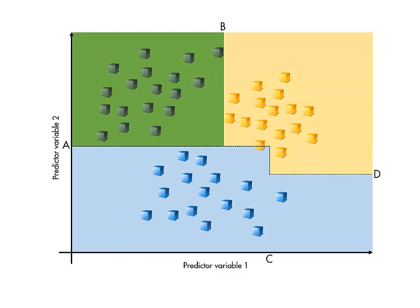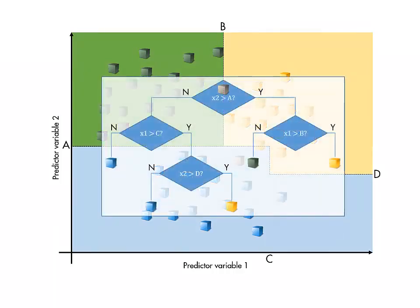Once a tree classifier is trained, making predictions is extremely quick, because it requires nothing more than a handful of binary decisions.